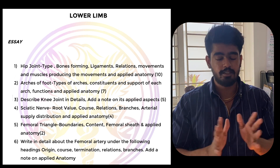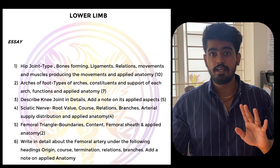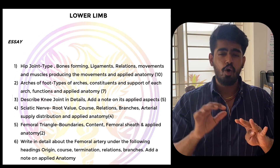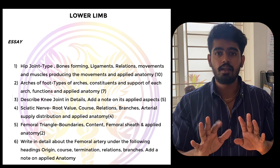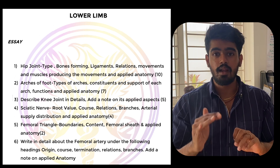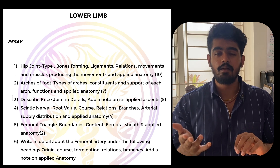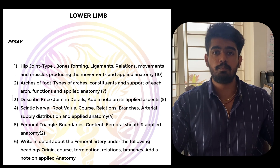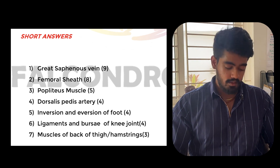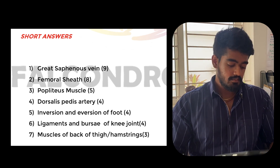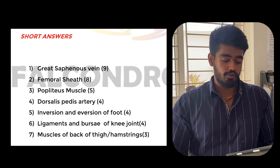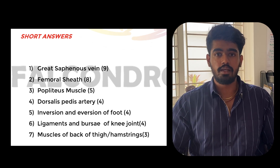I want this video to be short and crisp — I can't talk about every single important question; you have a question bank for that. Whatever question I mention, if you study it thoroughly, you will definitely pass. This video is for people who are in the last minute, who didn't really study well. Some of the short notes for lower limb are: greater trochanteric bursa, femoral sheath, popliteus muscle, dorsalis pedis artery, inversion and eversion of foot, and muscles of the back of thigh.